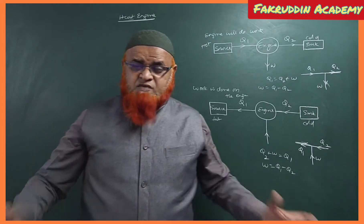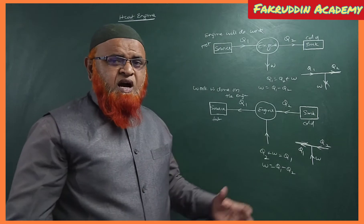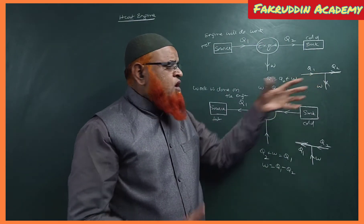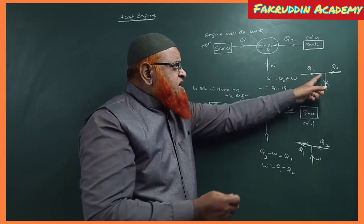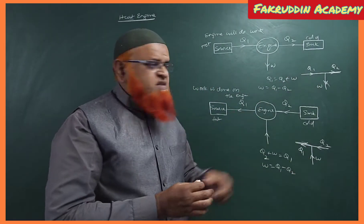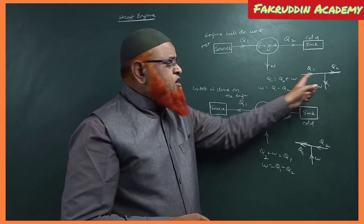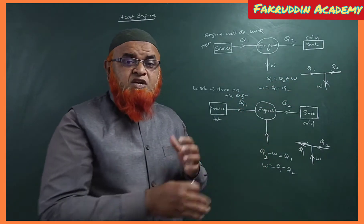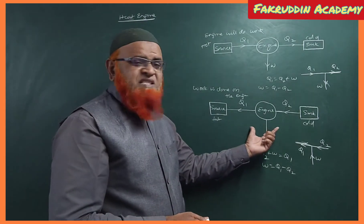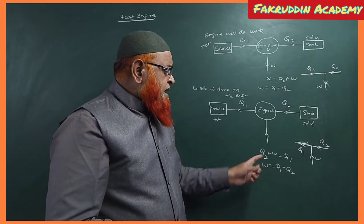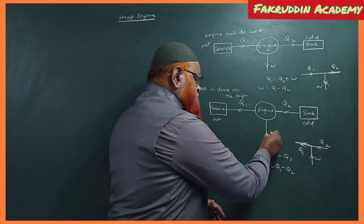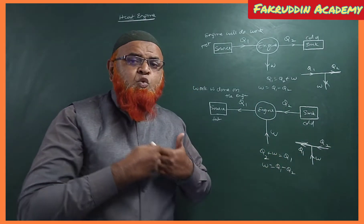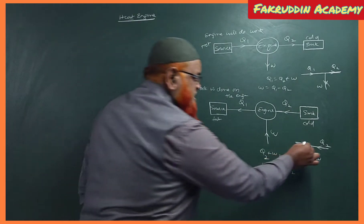We are going to apply Kirchhoff's law in this case. Here Q1 is the heat absorbed, W is the work done, and Q2 is the heat rejected. Q1 and W are meeting at the junction and Q2 is leaving the junction. Therefore we can write Q1 = Q2 + W.